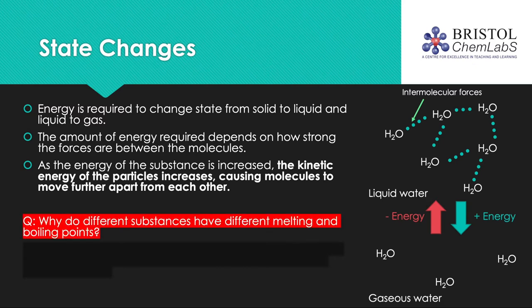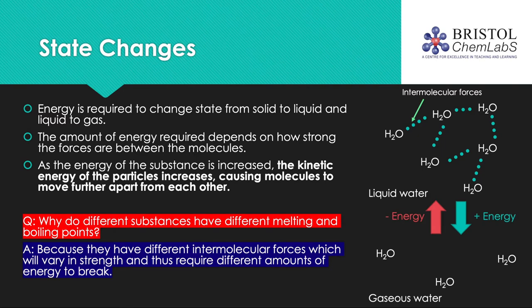Take one minute to answer this question: why do different substances have different melting and boiling points? Please pause the video here. The reason different substances have different melting and boiling points is because substances have different chemical properties, and thus different intermolecular forces which vary in strength, and therefore require different amounts of energy to break.